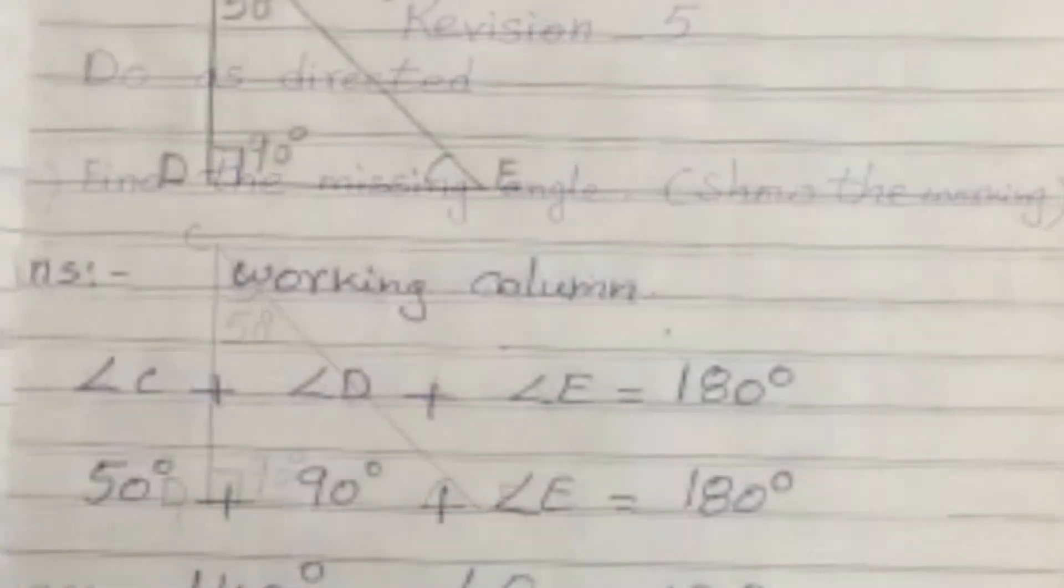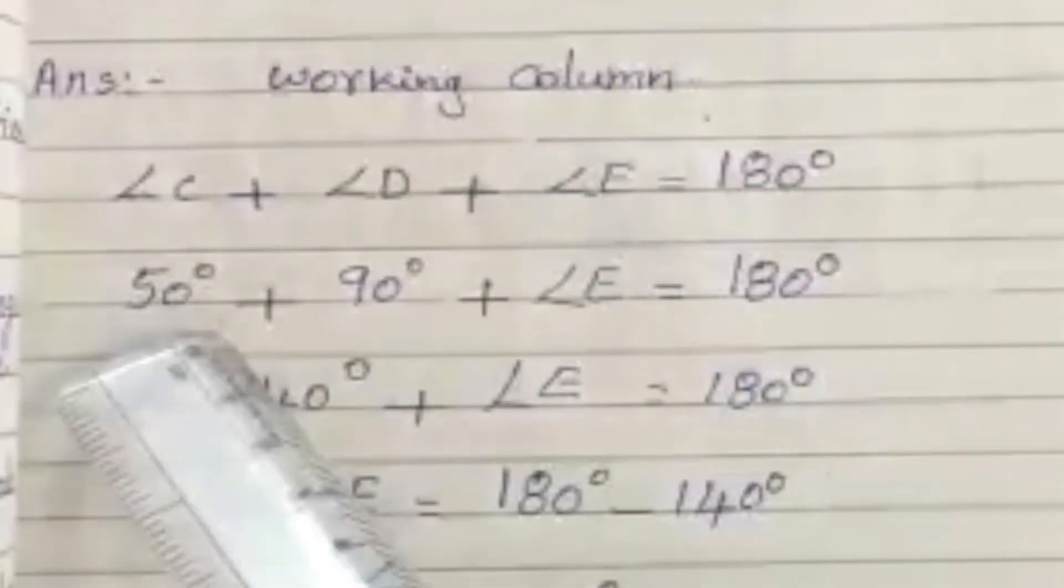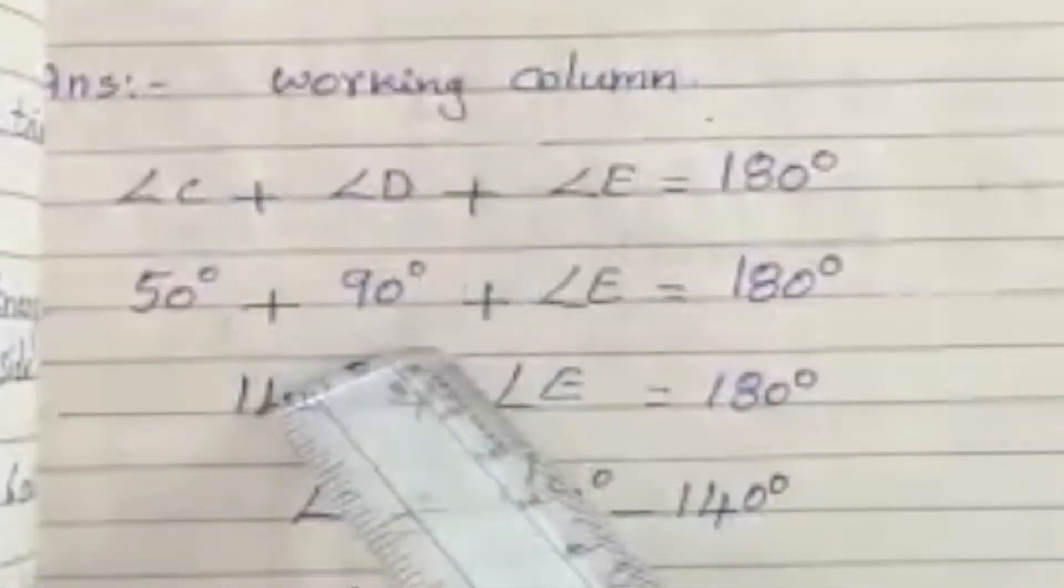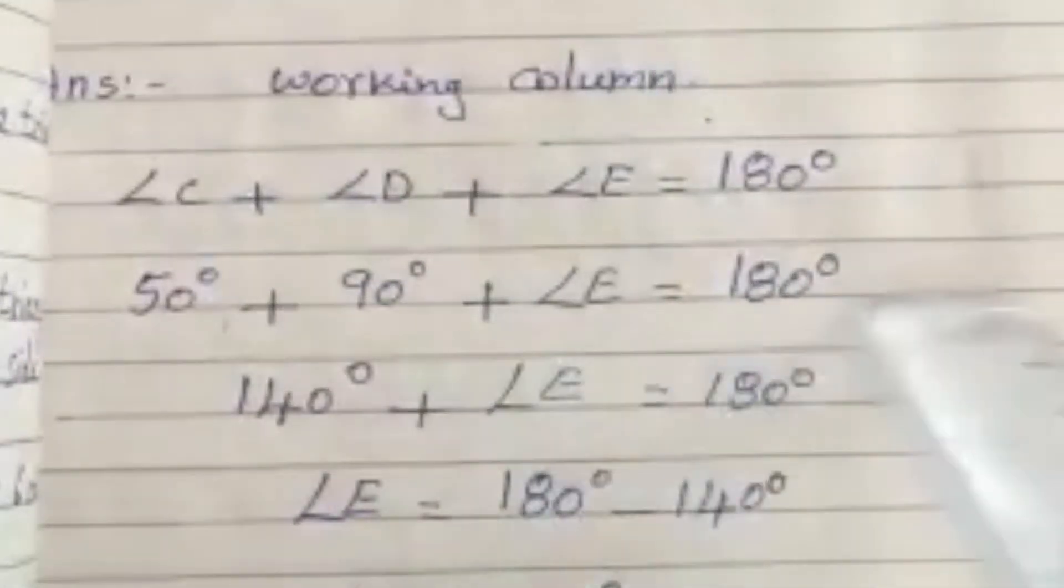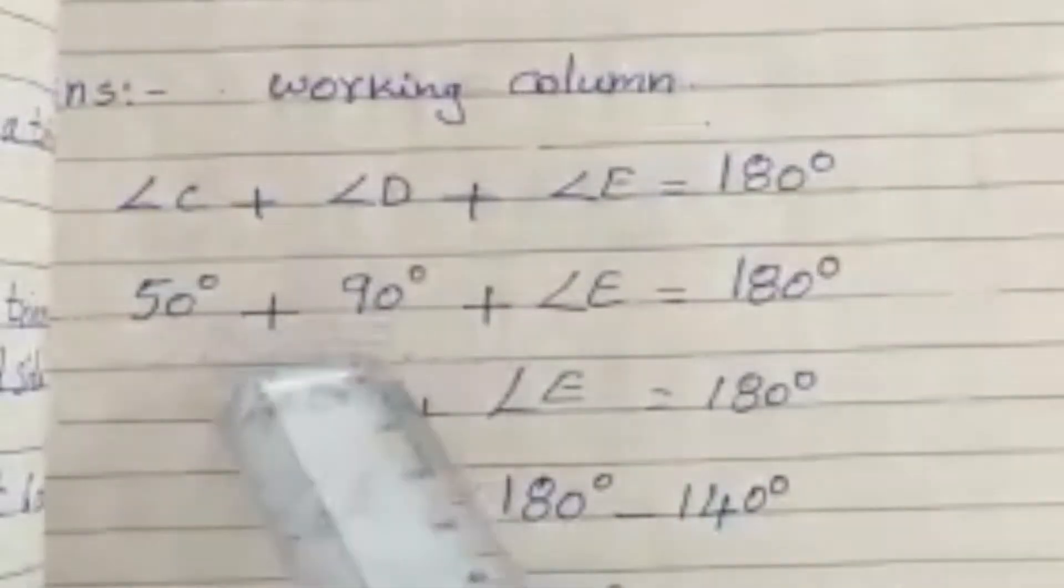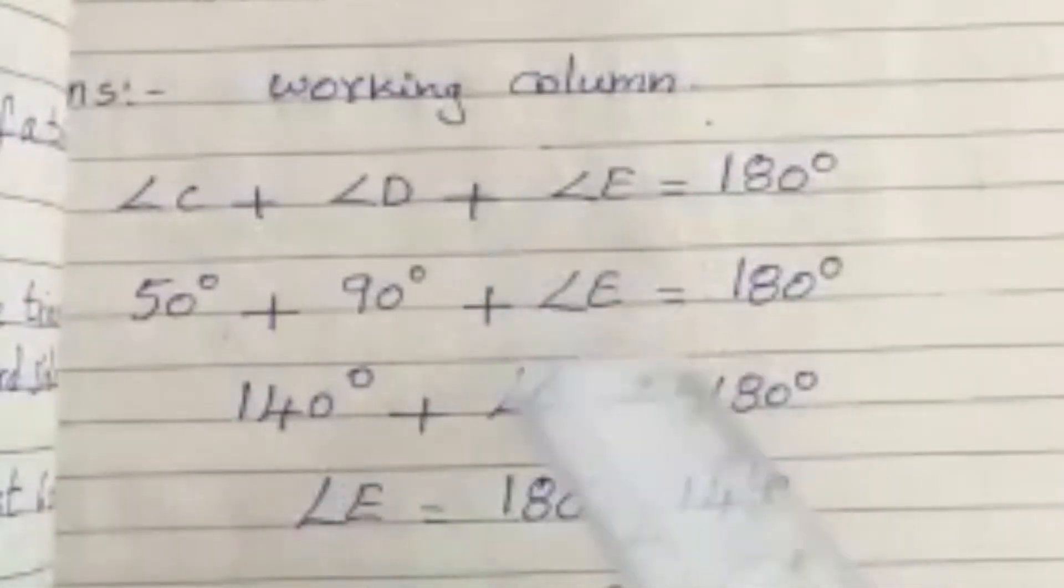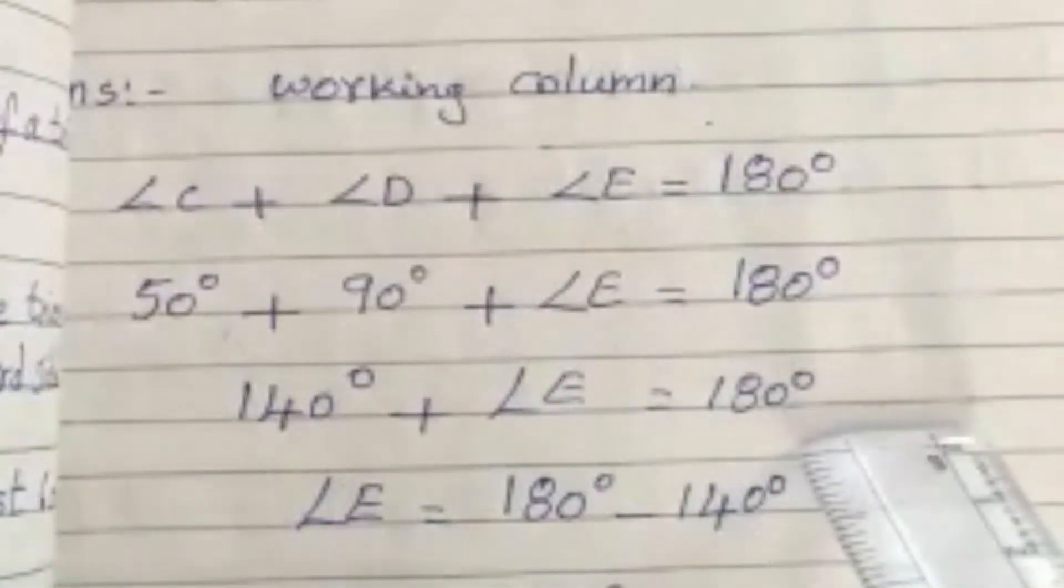We have to find out. Now show the working here in the working column. Angle C 50 degrees plus angle D 90 degrees plus angle E is equal to 180 degrees. So if we add these two then the answer is 140 degrees plus angle E is equal to 180 degrees.